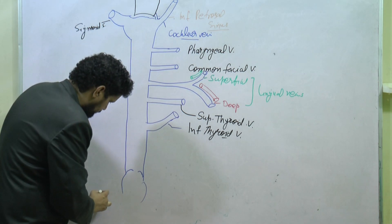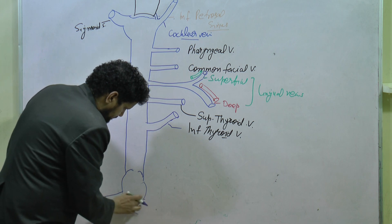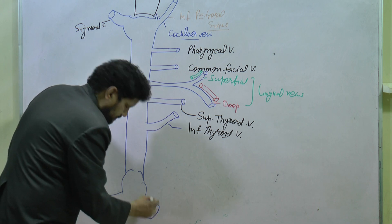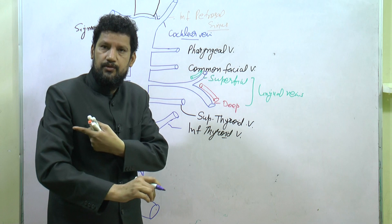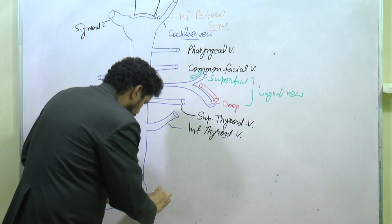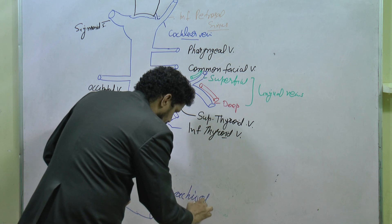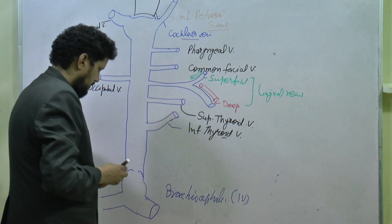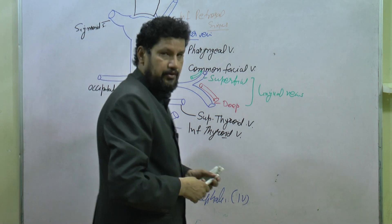Below the inferior bulb, the internal jugular vein joins the subclavian vein to form the brachiocephalic vein. 'Brachio' means arm and 'cephalic' refers to the head, so it connects the arm and head regions. This brachiocephalic (or innominate) vein then joins the vein of the opposite side to form the superior vena cava.